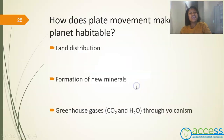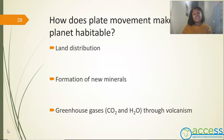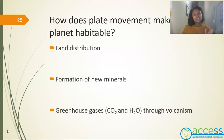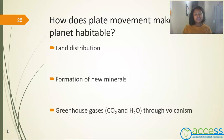That is amazing. How does plate movement make the planet habitable? The first way is land distribution — as the continents drifted, climatic conditions became favorable for life to exist on Earth. The second is the formation of new minerals: when plate tectonics occurs, new rocks are formed and exposed to the surface, enabling chemical reactions that produce new minerals. The last is greenhouse gases such as carbon dioxide and water, which occur through volcanism.